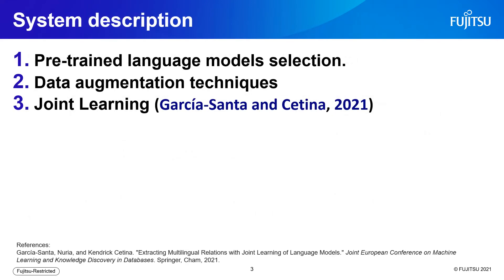Now, a quick description of our system as an overview. The summary of our system is the following. First, we searched for the two best performing pre-trained language models for our task. Then we used data augmentation techniques to extend the initial training data and fine-tune the selected language models with the joint learning ensemble approach described in Garcia-Santa et al. And finally, by qualitative analysis of results, we cleaned the model predictions with post-processing techniques. Now we will go in detail over each step.